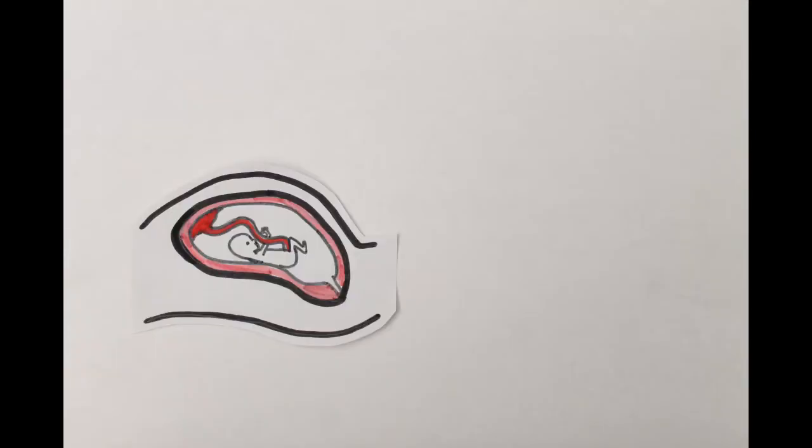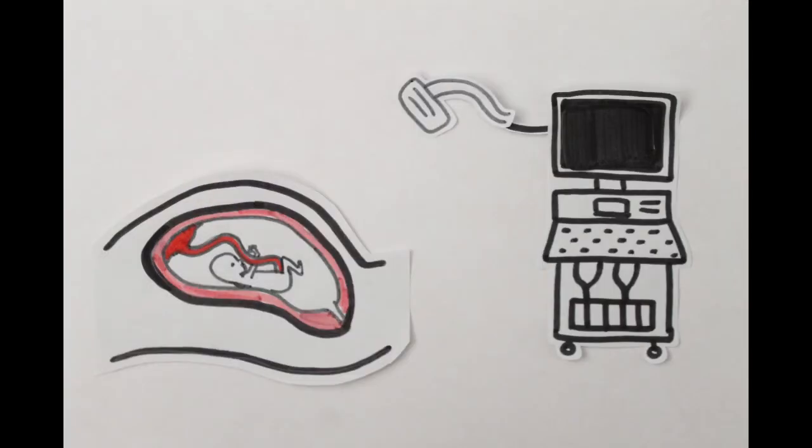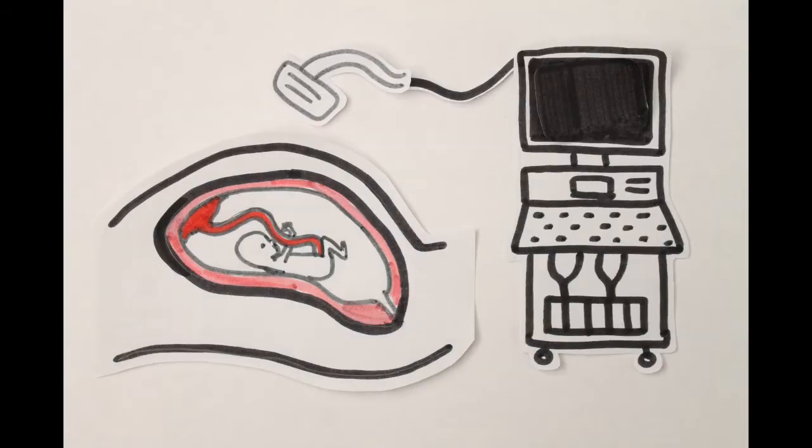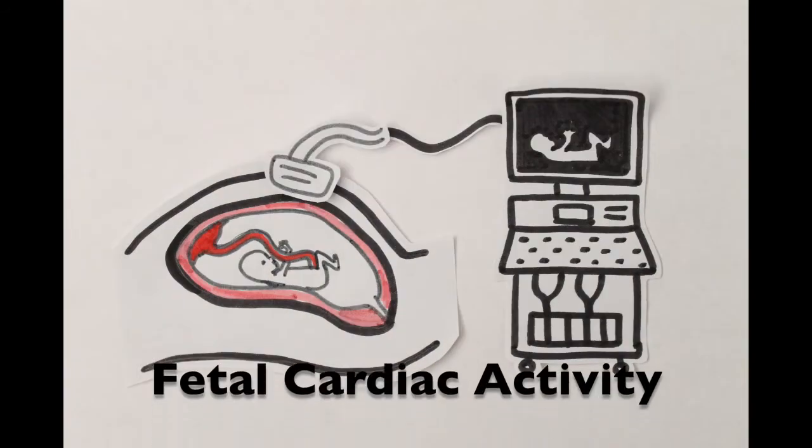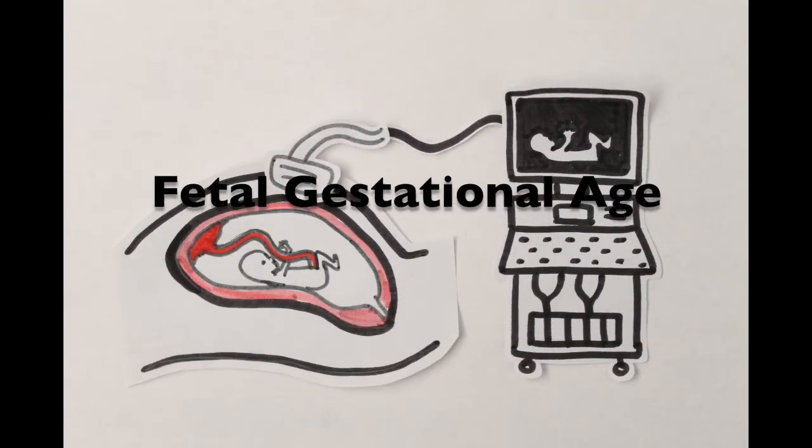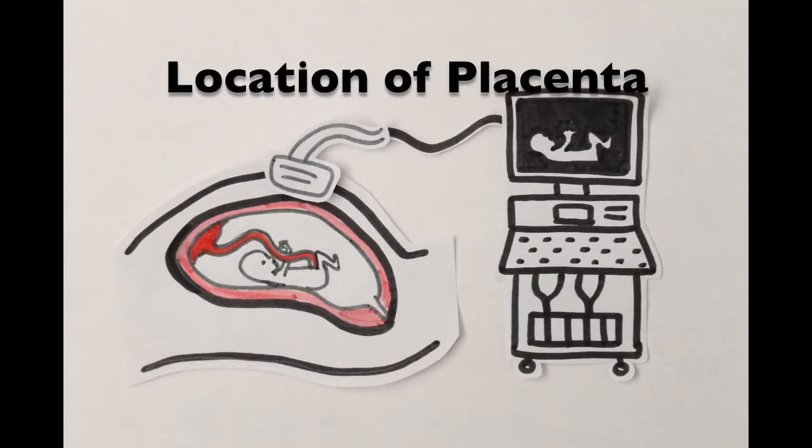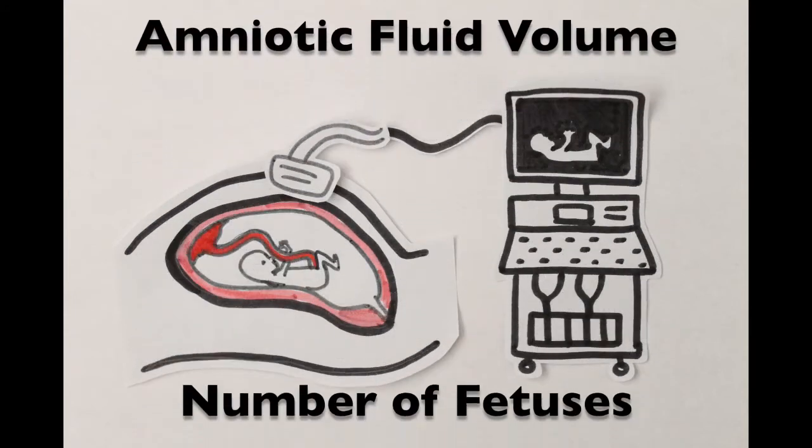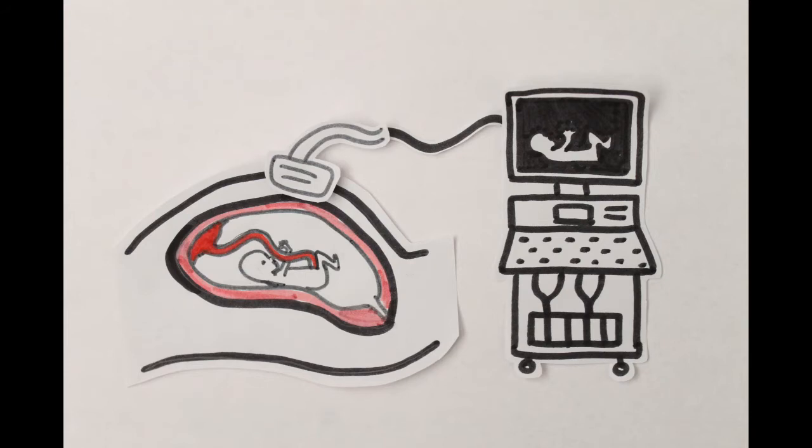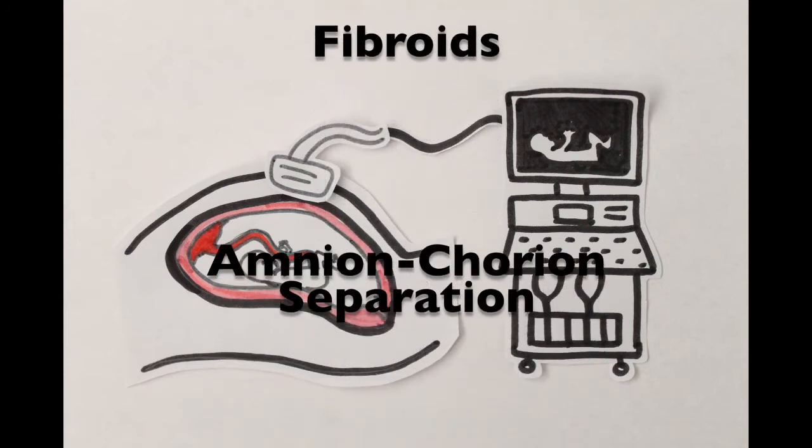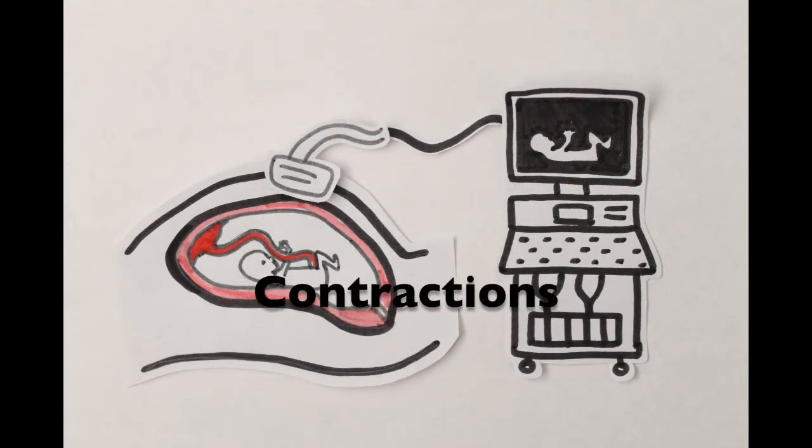The process is done when a pregnant person comes in to do their ultrasound. From the ultrasound, one can determine fetal cardiac activity, fetal gestational age, location of placenta, amniotic fluid volume, number of fetuses, and uterine factors such as fibroids, amniocorion separation, or contractions.